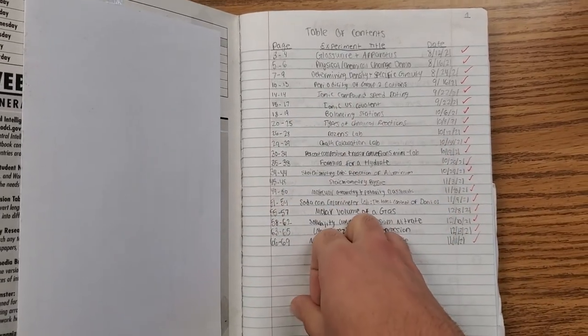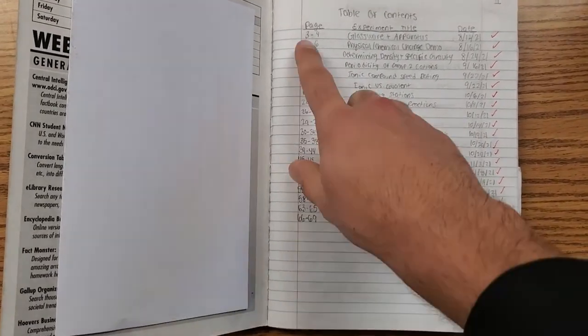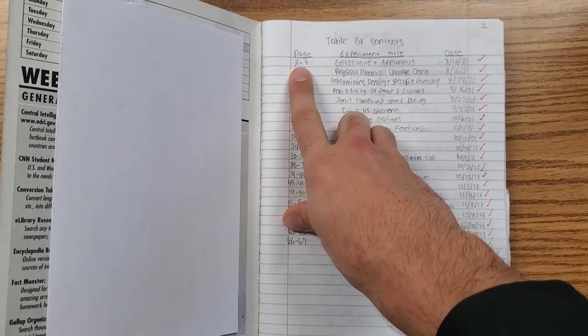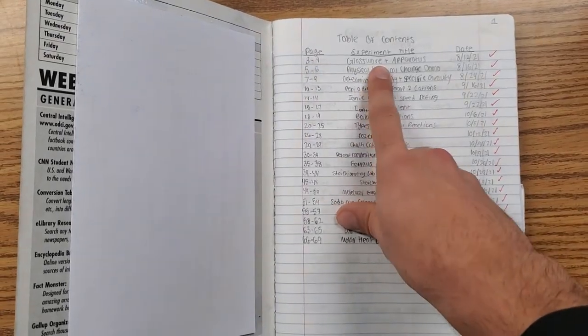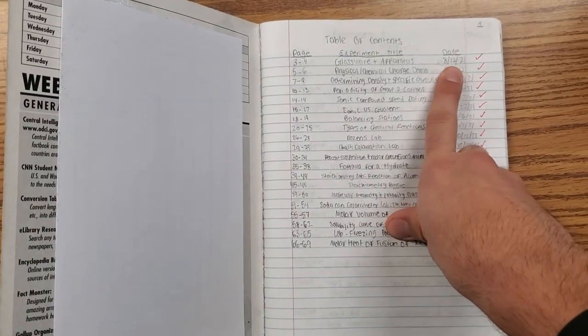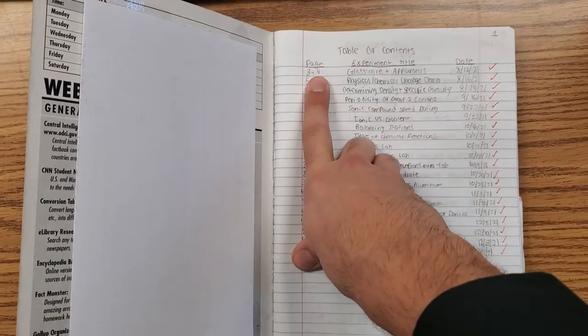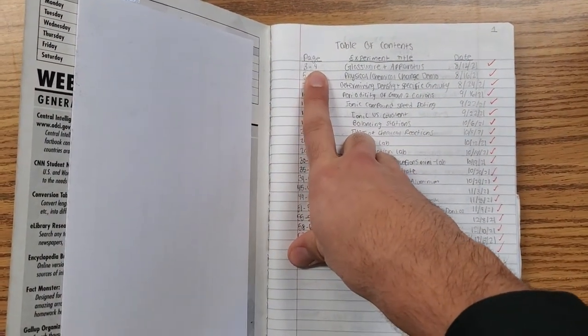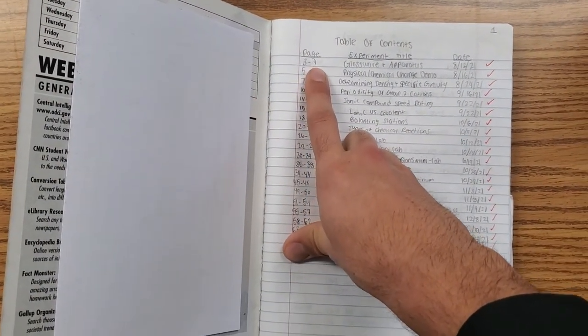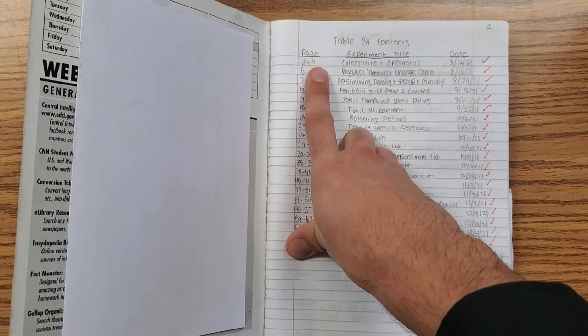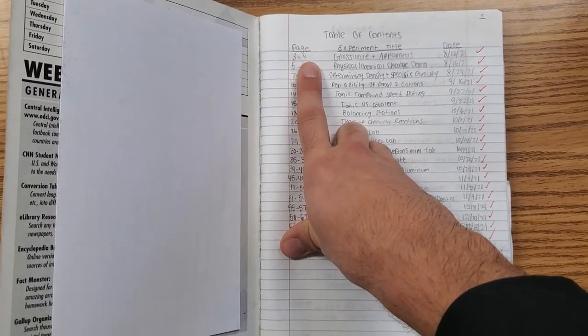Now, whenever you're prepping your lab notebook ahead of time, you will be able to do the page number that you start on, the experiment title, and the date that you expect to do the lab. You won't necessarily be able to know the last page number, so you'll just leave that blank at first, but after the lab you'll be able to go back and say we ended up on page 4.